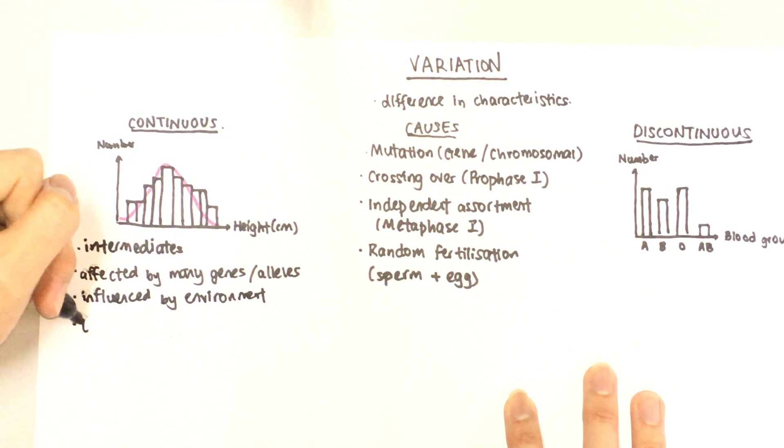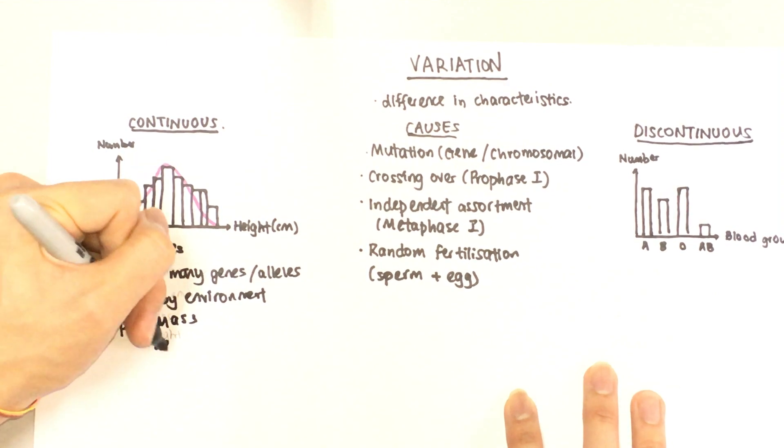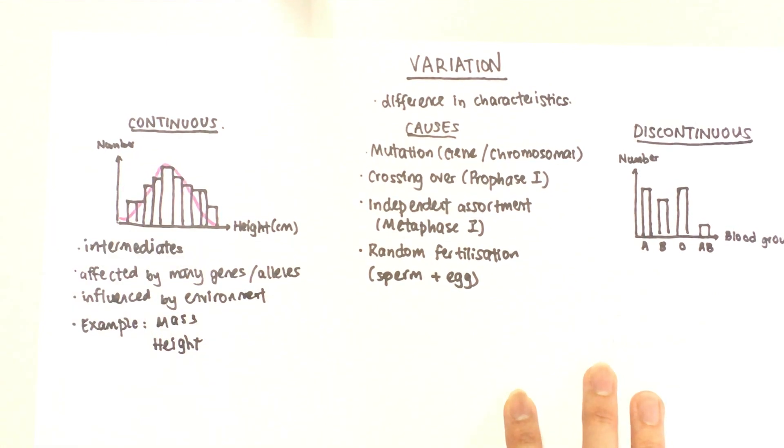So examples of continuous variation would include, for example, mass or height, because as we know there's a lot of different masses and different heights in the entire population, and what you eat or what you do in your daily life can affect both of them.